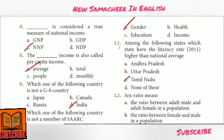Among the following states, which states have the literacy rate higher than the national average? — Answer Option C: Tamil Nadu.